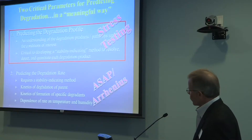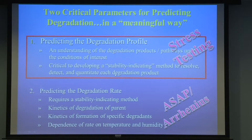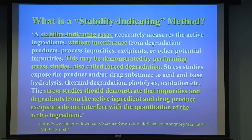That's the foundation from which you can then do your ASAP prediction, so that you can get kinetics detail and information once you have this understanding. It's the degradation profile from which you develop your stability indicating method. Some people say the ICH guidelines never really define a stability indicating method, so here's one you can find.